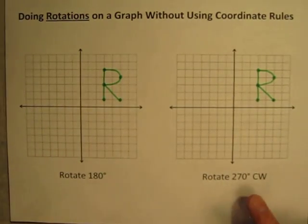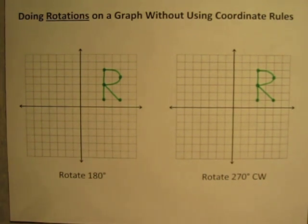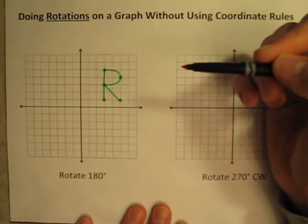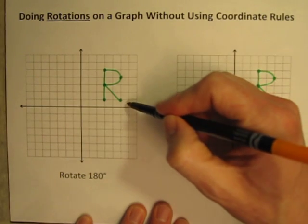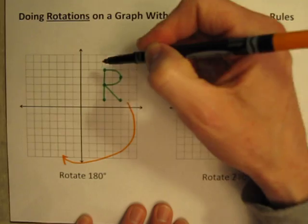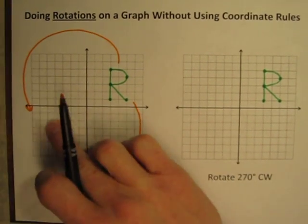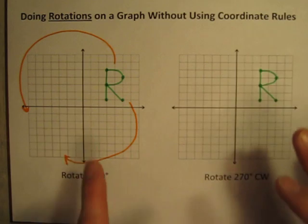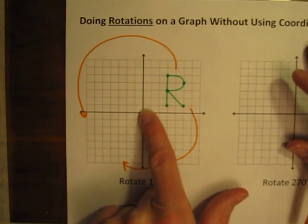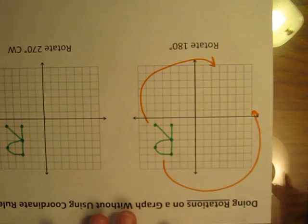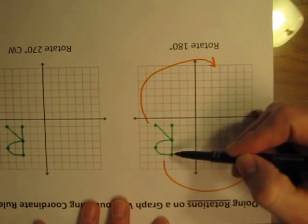Let's do two more: a 180, and a 270 clockwise. For 180 degrees, it doesn't say clockwise or counterclockwise — which way are we supposed to go? Well, it turns out that it doesn't matter. 180 degrees of a circle is halfway around — it's half of 360 degrees. So I could go 180 degrees around this way, or 180 degrees around this way, and I end up in the same quadrant. It does not matter which way. So it's going to be down here, and if you can't visualize what it will look like, just turn the paper halfway around — a half turn, because 180 degrees is half of 360. There's the letter R — that's what it's going to look like.